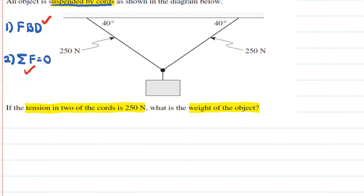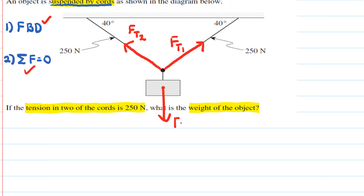For our free body diagram, we have a force acting in this direction caused by the tension in the rope — we'll call this force tension one, FT1. We also have another force on this side of the rope, FT2. Then the object also has weight, so it has a force of gravity going in the downwards direction.